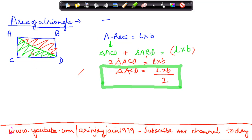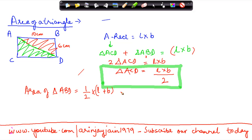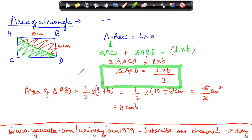Now let me take an example. Suppose the length here is 10 cm and the breadth here is 6 cm. Then the area of triangle ABD is going to be 1 divided by 2 into length into breadth, or 1 divided by 2 into 10 cm into 6 cm, which gives us 8 cm square.